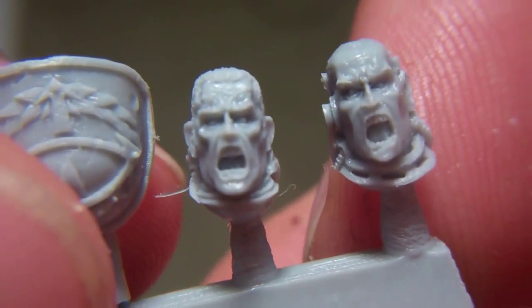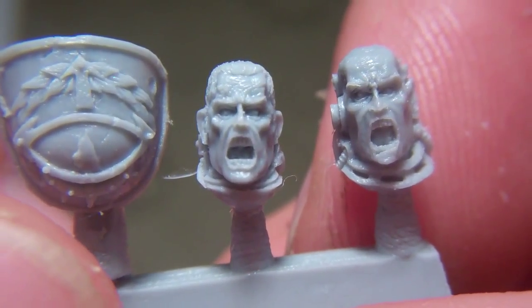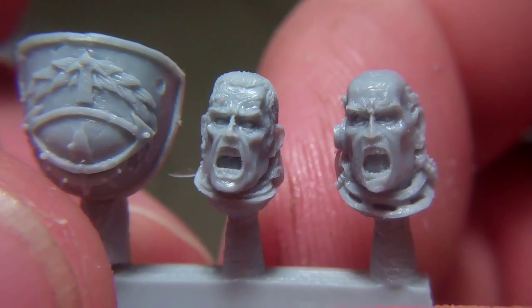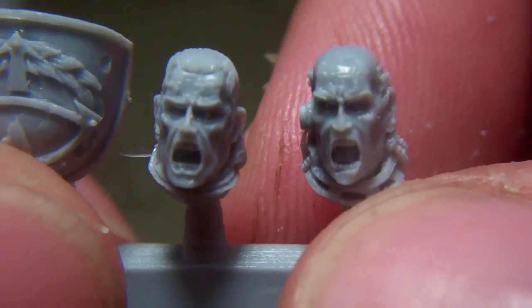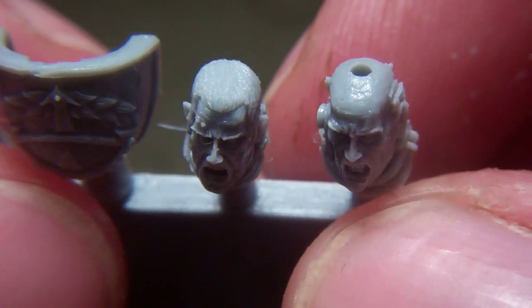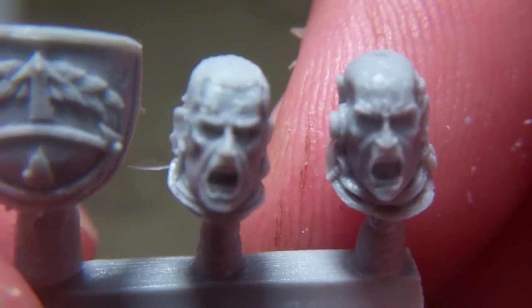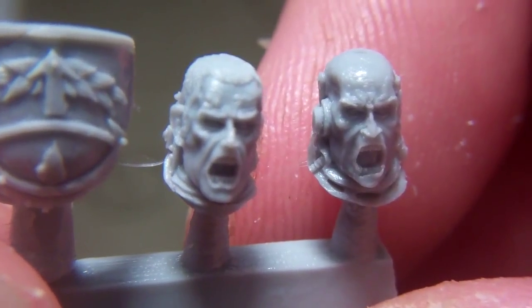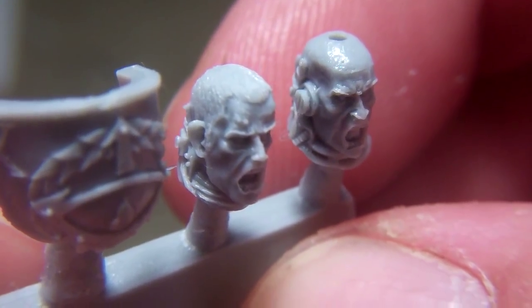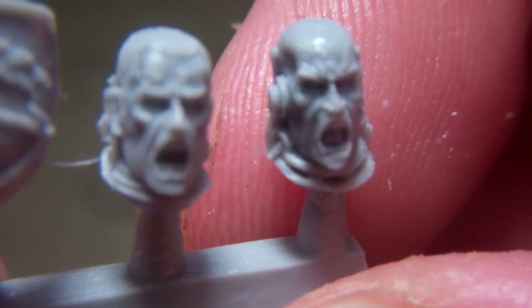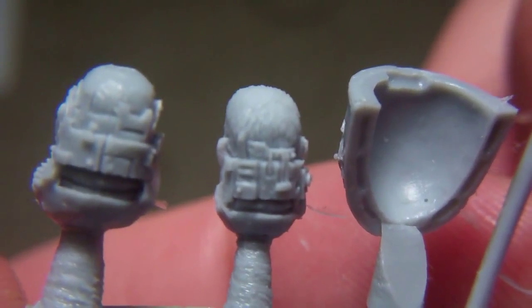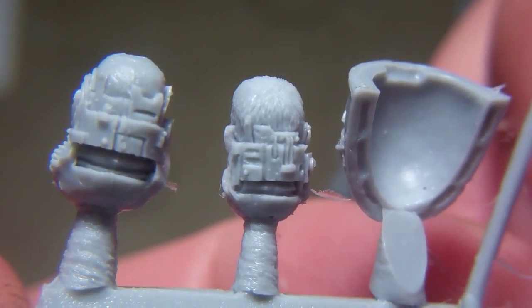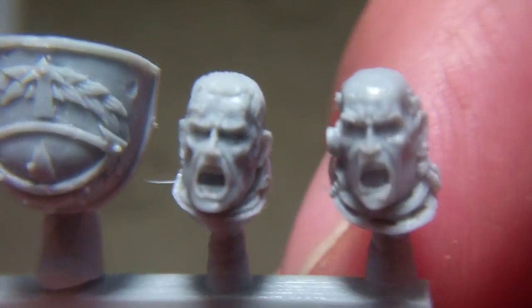Then we have the heads for both models. Both kind of screaming. You have Loken on the left here and Abaddon on the right. Abaddon is kind of clean shaven. Loken has short hair. I see some service studs in Loken's forehead. I don't see them in Abaddon's, but goodness be now he's chosen to not wear them.